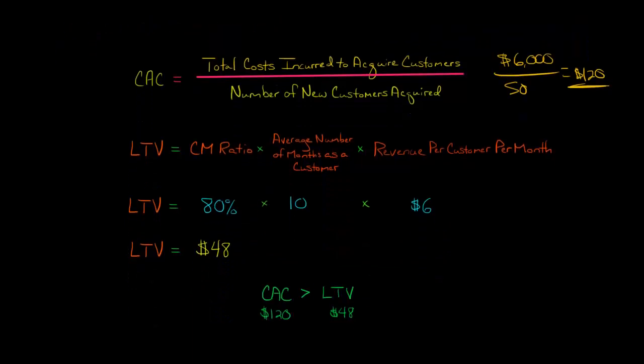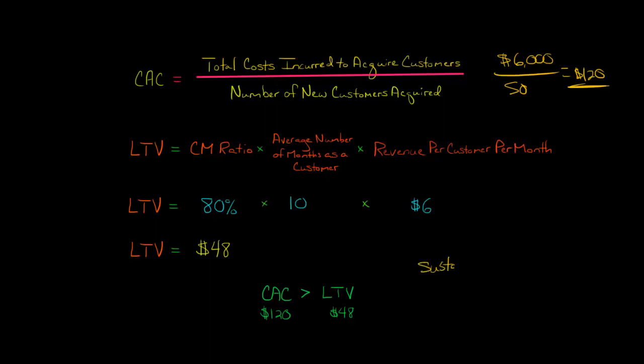We've got a problem here, because it costs us $120 to acquire a customer, but the lifetime value of that customer is only $48. We've got to change our business model, raise our price, or somehow get people to spend more money, because this is not sustainable.